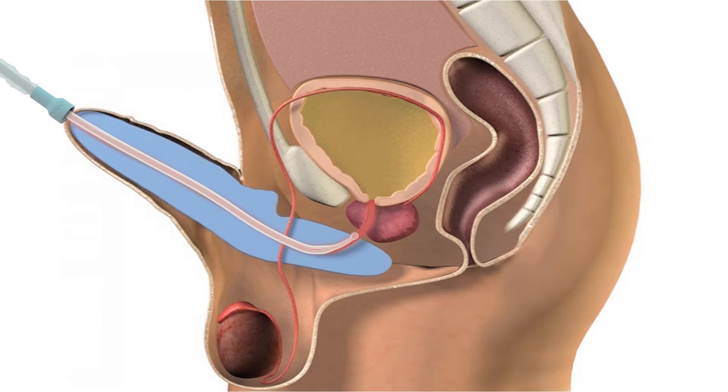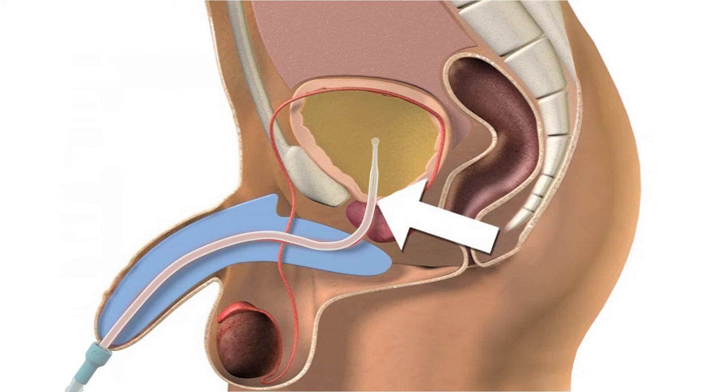It is normal that you feel resistance from the sphincter, so be gentle. Continue to insert the catheter until it reaches your bladder and the urine starts to flow. Then continue for a few centimeters further.